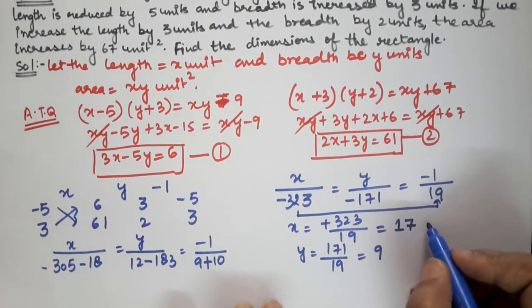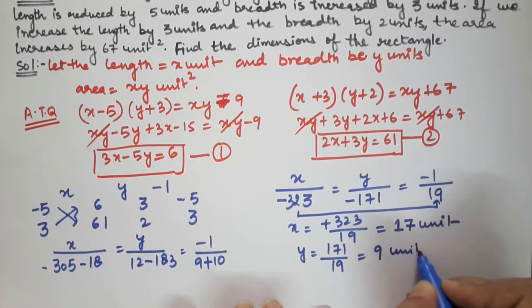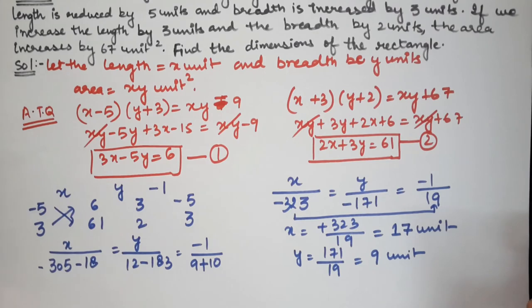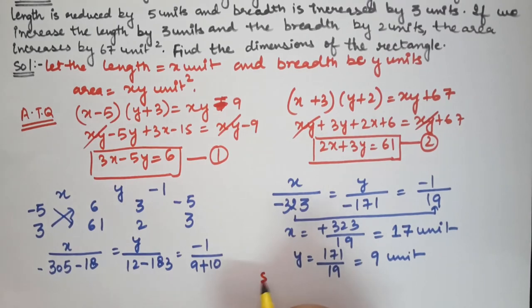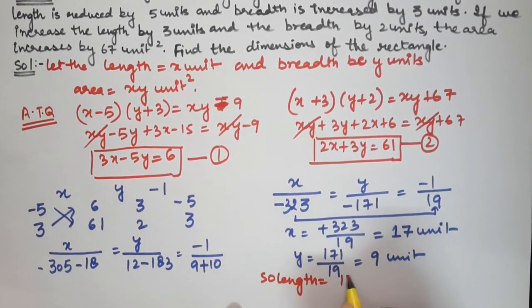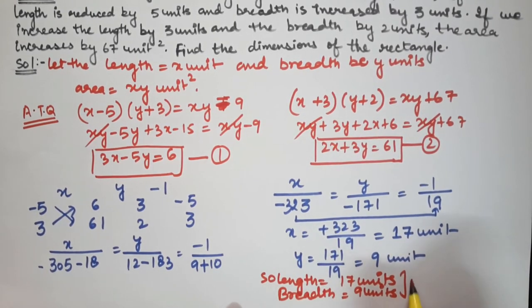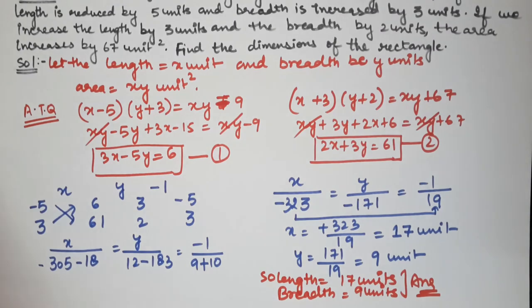It means the length is equal to 17 units and the breadth is equal to 9 units. So we have easily found the length and breadth. We formed the dimensions of the rectangle by letting length be x units and breadth be y units.